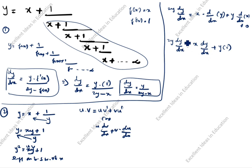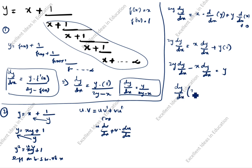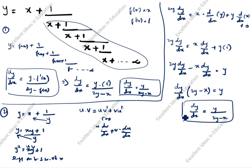Bringing dy/dx to one side: 2y·dy/dx − x·dy/dx = y. Taking dy/dx as common: dy/dx·(2y − x) = y, so dy/dx = y divided by (2y − x). Both the formula method and differentiation method give the same answer.